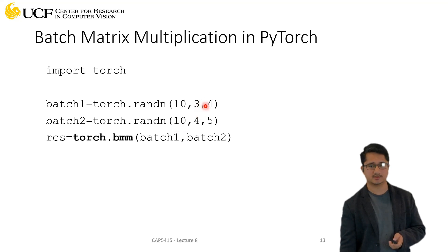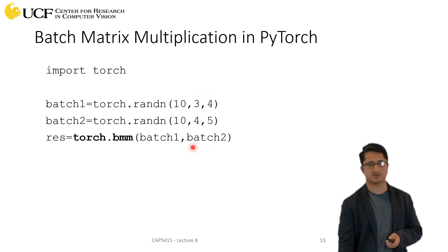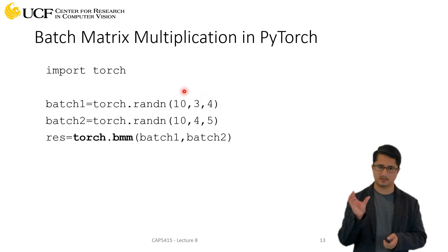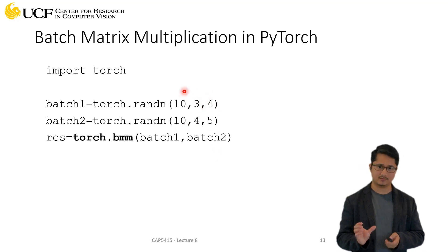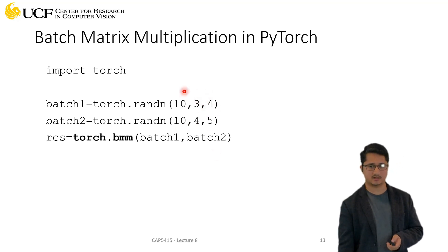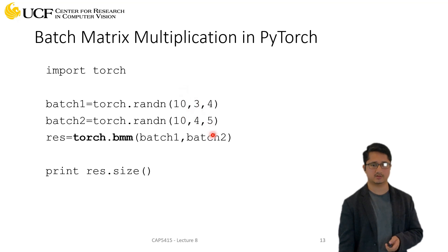The common axis is resolved, so the resultant matrix will be of shape 3×5. You will get 10 different matrices, each with shape 3×5.